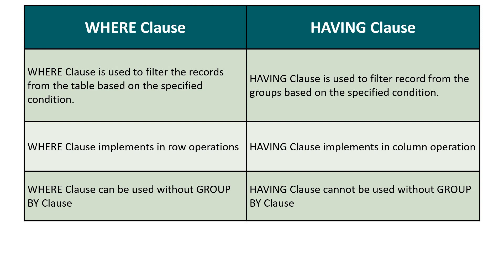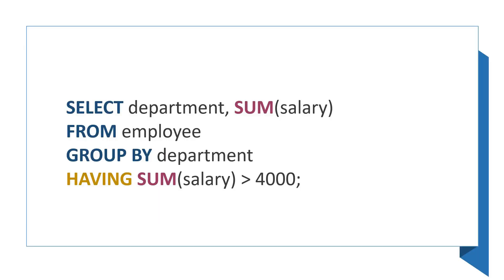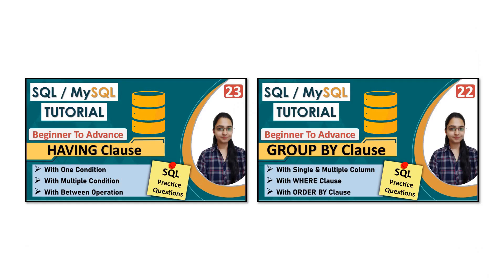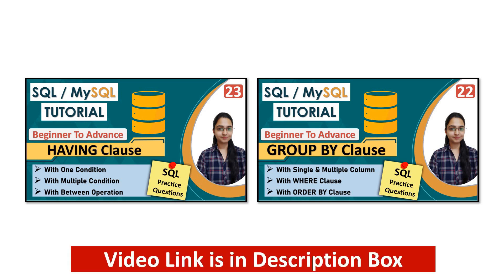In this query we grouped the rows by the department column before using the having clause, because the having clause works on grouped data. That's why we must use the group by clause whenever we use the having clause. If you have any doubt, you can check out the separate videos where I discussed group by and having clause in detail — the video links are in the description box.